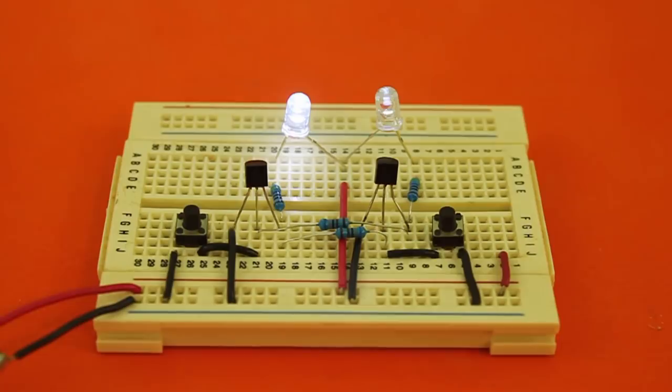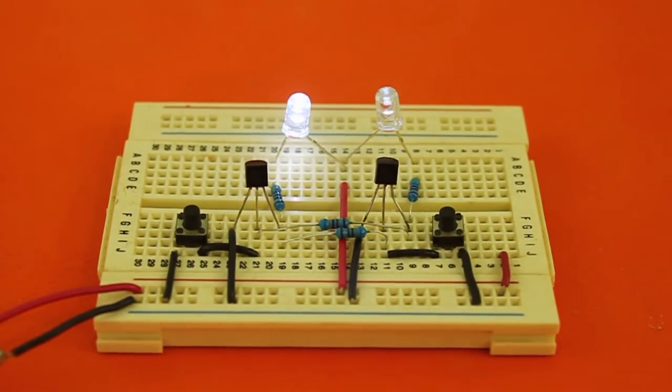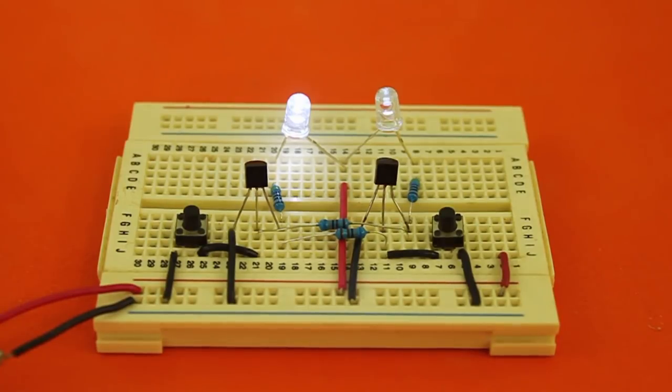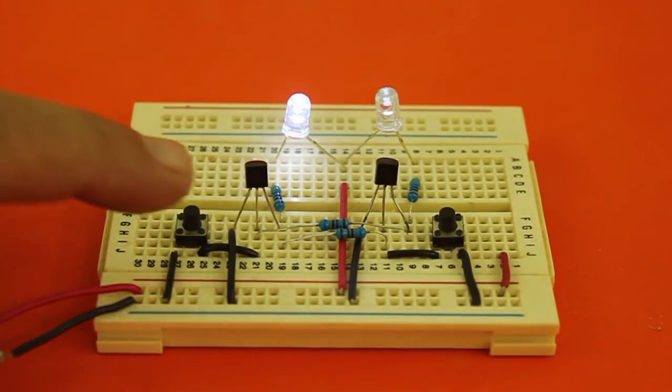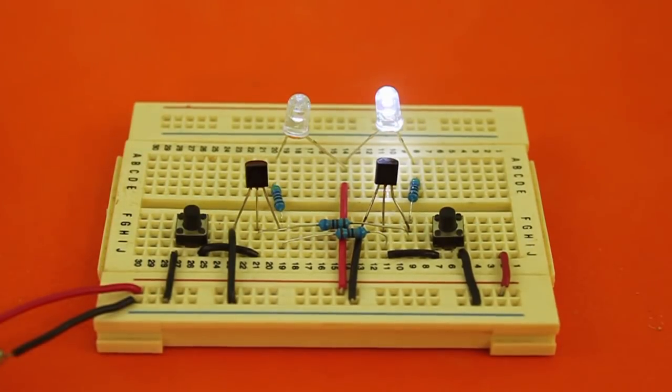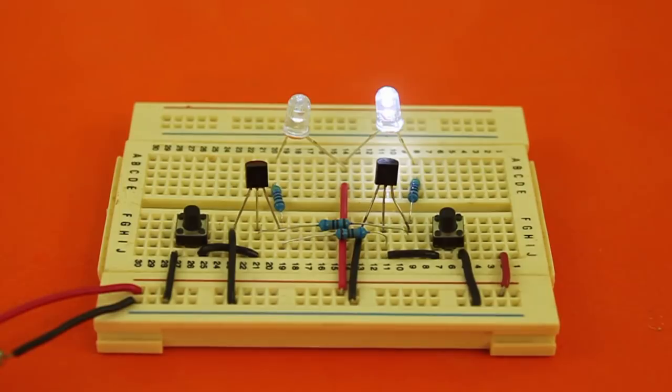The control inputs are these two push-button switches. So, for example, if we want to store in the memory a one, we apply a signal here and this LED is on, which means that the memory has a one in it.